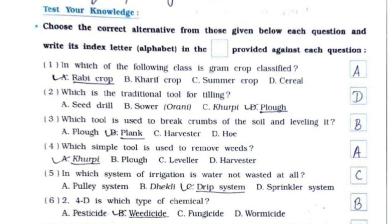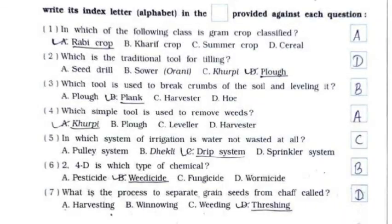Third: which tool is used to break crumbs of the soil and level it? It's option B — plank. Fourth: which simple tool is used to remove weeds? It's option A — khurpi. Fifth: in which system of irrigation is water not wasted at all? It's option C — drip system.